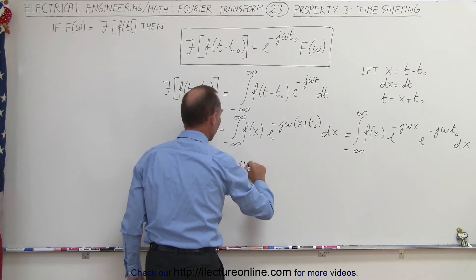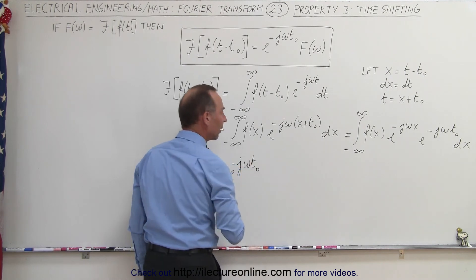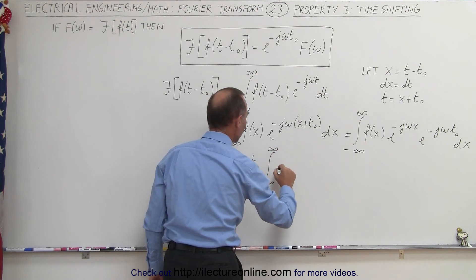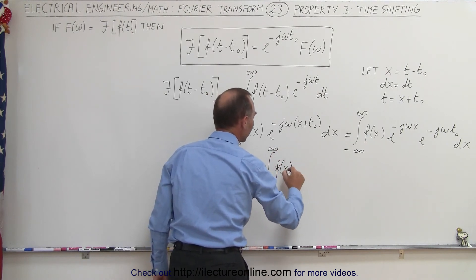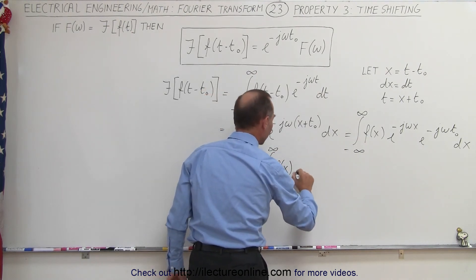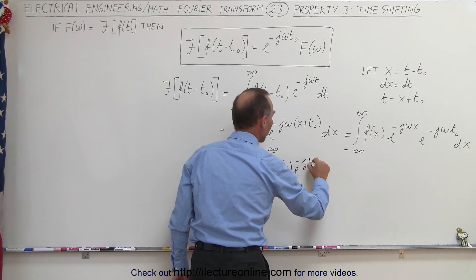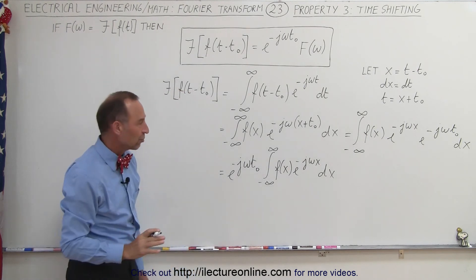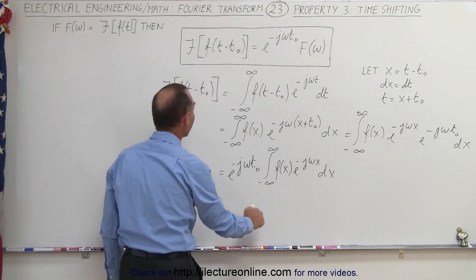So let's get rid of this j here, times the integral from minus infinity to infinity of f of x, and then we still have e to the minus j omega x dx. And that's the general equation of a Fourier transform, so that can be replaced by the Fourier function.